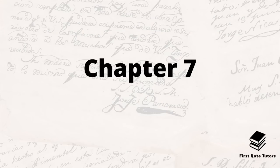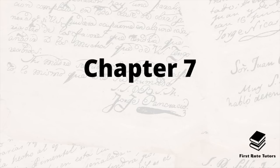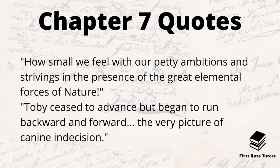Chapter seven, The Episode of the Barrel, shows Watson returning Miss Morstan to her home, borrowing Toby the dog, and returning to Pondicherry Lodge. Jones has arrested not only Thaddeus but most other members of the household, giving Watson and Holmes the opportunity to explore possible escape routes. Toby smells creosote that one of the murderers stepped in and they follow the dog's lead throughout the night across much of South London. During the journey Holmes explains how he knew so much about Jonathan Small and his mysterious companion. After some indecision, Toby leads them to a large barrel full of creosote. Key quotes: 'how small we feel with our petty ambitions and strivings in the presence of the great elemental forces of nature' and Toby 'began to run backward and forward, the very picture of canine indecision.'